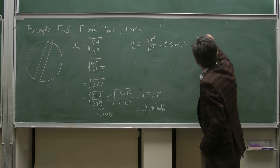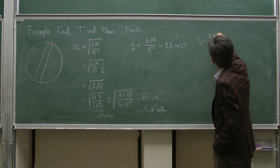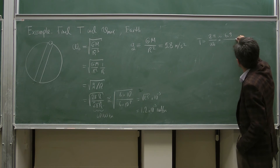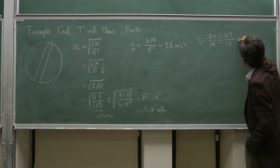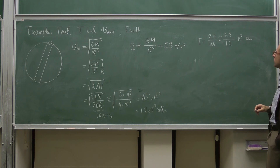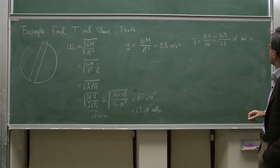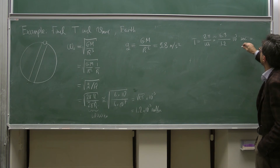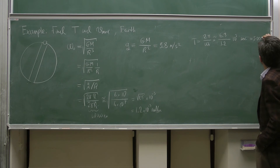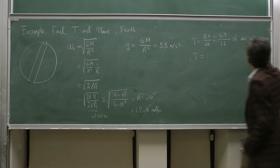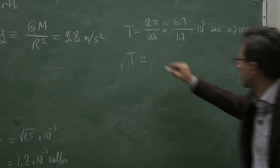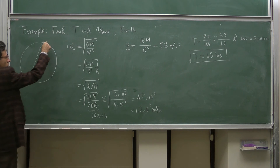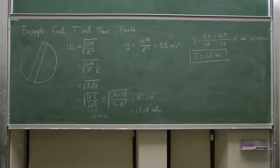So the period is equal to 2π divided by omega_0, which is approximately 6.3 divided by 1.2 × 10⁻³ seconds in standard units, giving 4,000 to 5,000 seconds. Since 3,600 seconds is one hour, the period is about 1.5 hours — meaning the object moves from one side to the other and back in 90 minutes.